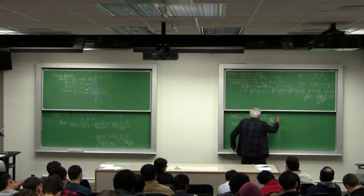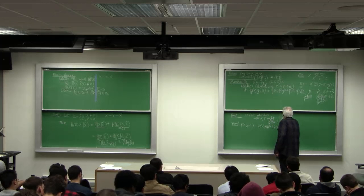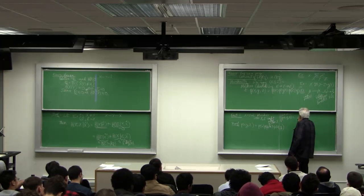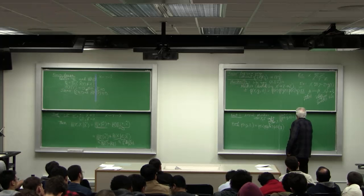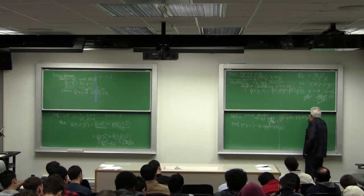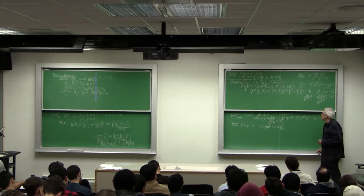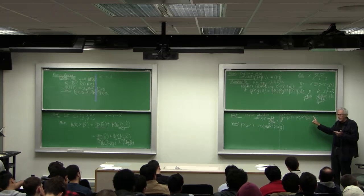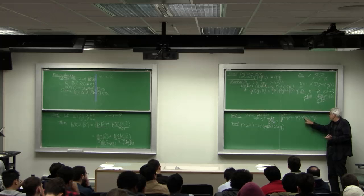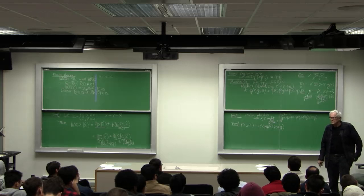And I want to show P of X, Y, Z equals P of Y times P of X given Y times P of Z given Y. That's what I mean by conditional independence. Given Y, the conditional distribution of X and Z given Y is the product distribution given Y.